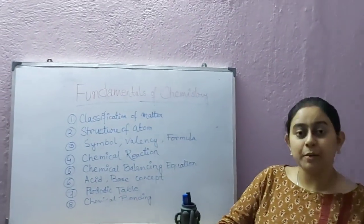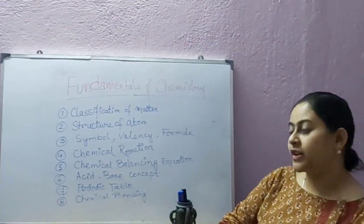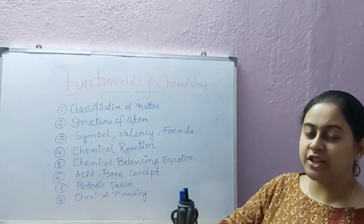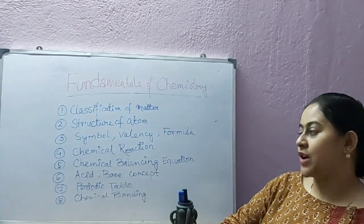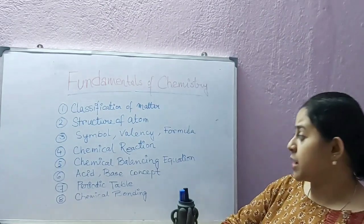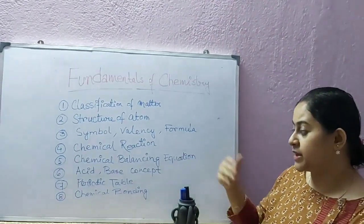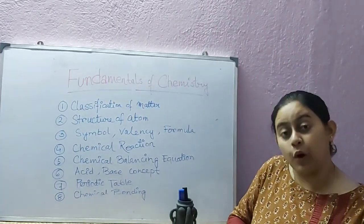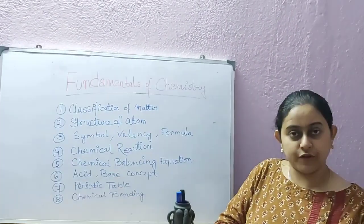These are the fundamental topics of chemistry: Number one is classification of matter. What is matter and how it is classified I will teach you in my next video. Next topics are structure of atom, symbol, valency, formula, chemical reaction, chemical balancing equation, acid-base concept, periodic table, and chemical bonding. These are the main fundamental topics of basic chemistry.